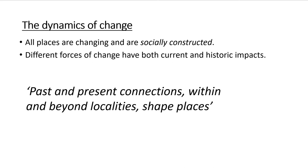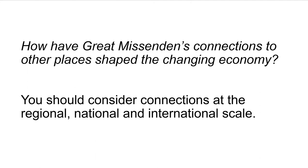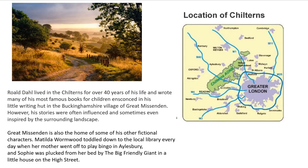What we're going to be looking at today is the idea of places being socially constructed, and how both current and historical changes can have a huge impact. The idea is that past and present connections shape the place. We need to think about how Great Missenden is connected to other places regionally, nationally and internationally.